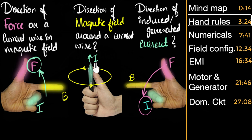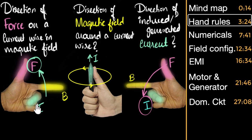When do we use the right hand thumb rule, the right hand clasp rule? This is when we are interested in the magnetic field that is produced by the electric current. In the other cases (left hand and right hand generator rule), the magnetic fields are not the ones created by that current — the magnetic field may be created by some magnet. So when you're talking about magnetic field created by the current, that's when we go for the right hand thumb rule.